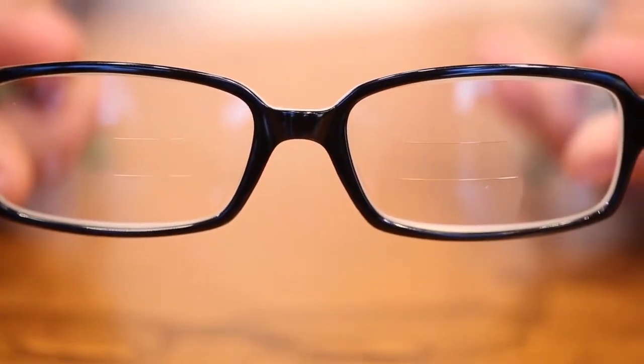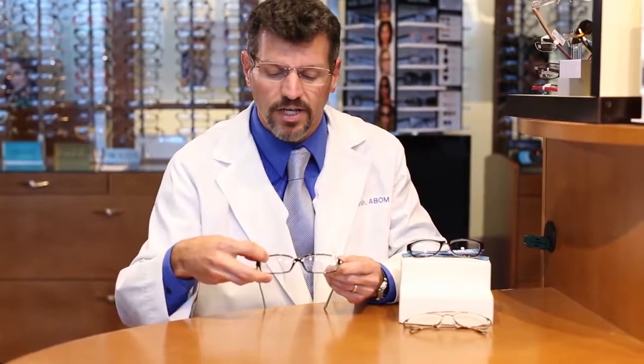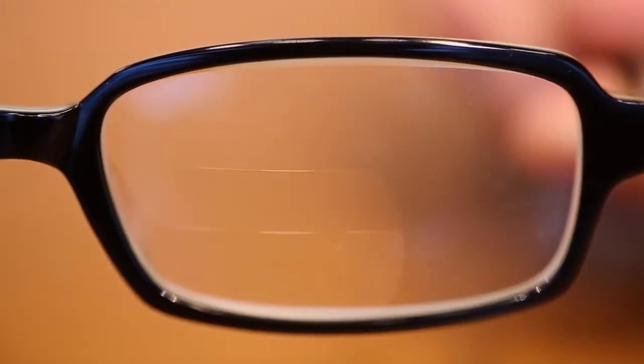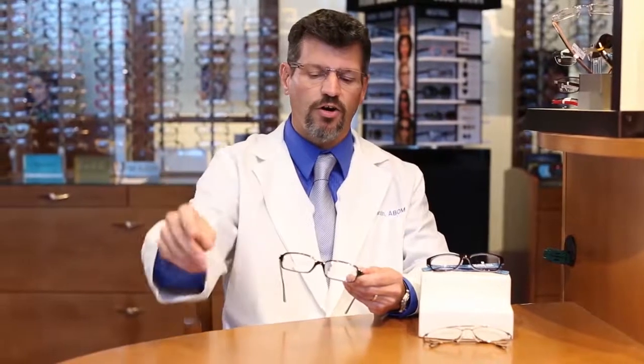So for a trifocal, again you've got that top there that helps you see things that are far away, just like the glasses you may have worn since you were a little kid. Then you've got that little section we talked about with the bifocal down here at the bottom. But you're going to notice that there's a second line, there's a little ribbon right here, and that's called intermediate vision and allows you to see things like your computer, anything else that's right at arm's length.